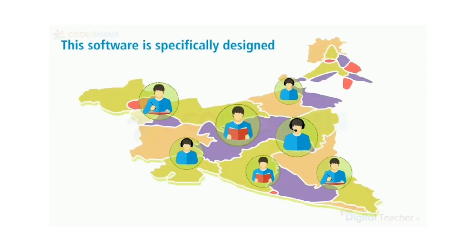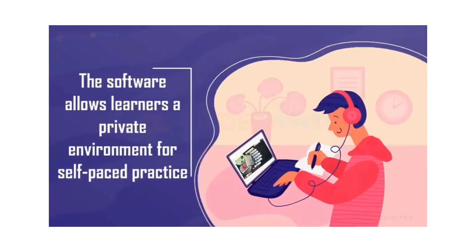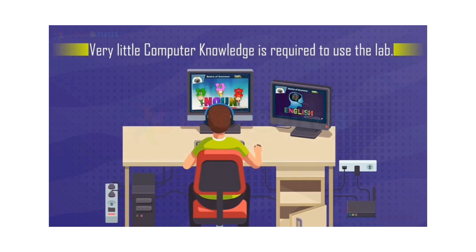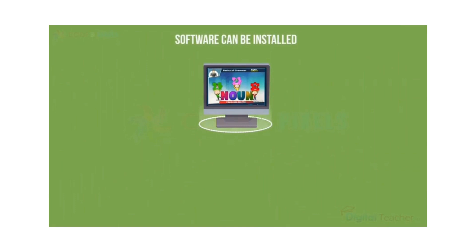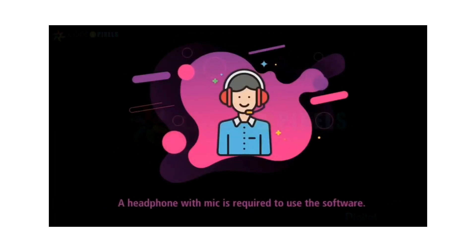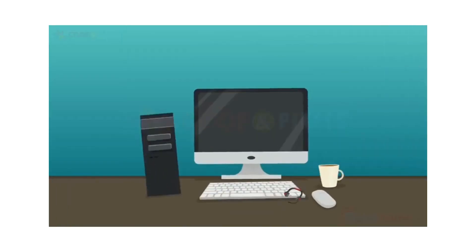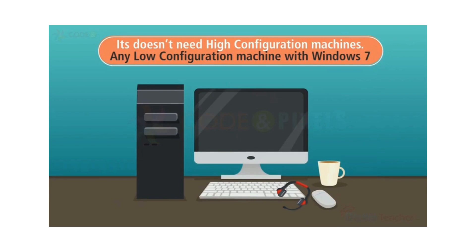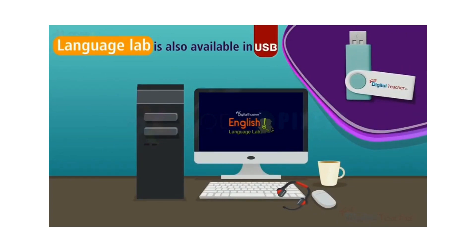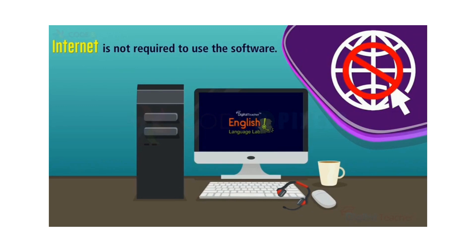This software is specifically designed for students of India. The software allows learners a private environment for self-paced practice. It has a user-friendly graphical user interface, is very easy to navigate, and requires very little computer knowledge. The software can be installed in standalone systems or a client-server environment. A headphone with mic is required. It doesn't need high-configuration machines — any low-configuration machine with Windows 7 and above is sufficient. The Language Lab is also available on USB, and internet is not required to use the software.